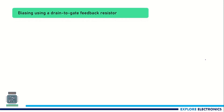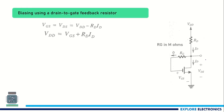The next approach is biasing using a drain-to-gate feedback resistor. In this circuit, there is a resistor RG connected between the drain and gate of the device. By using this RG, the gate-to-source voltage VGS is equal to VDS. This is because the current flowing into the gate of the MOSFET is always zero due to the insulator present in between. Since IG equals zero, the voltage drop across RG is zero, so VGS equals VDS.